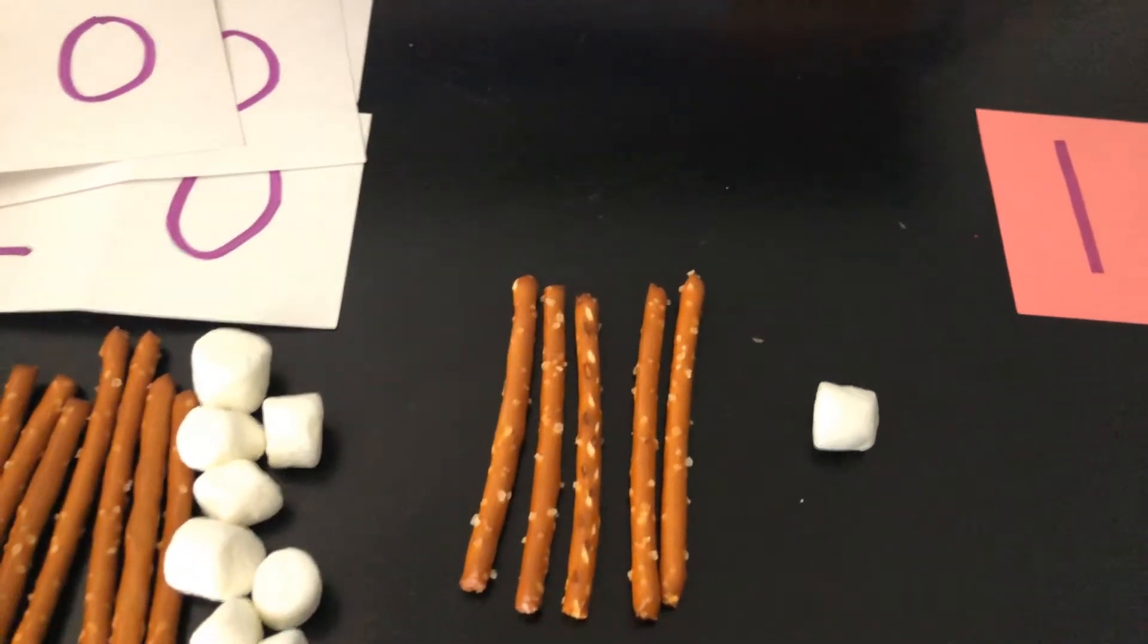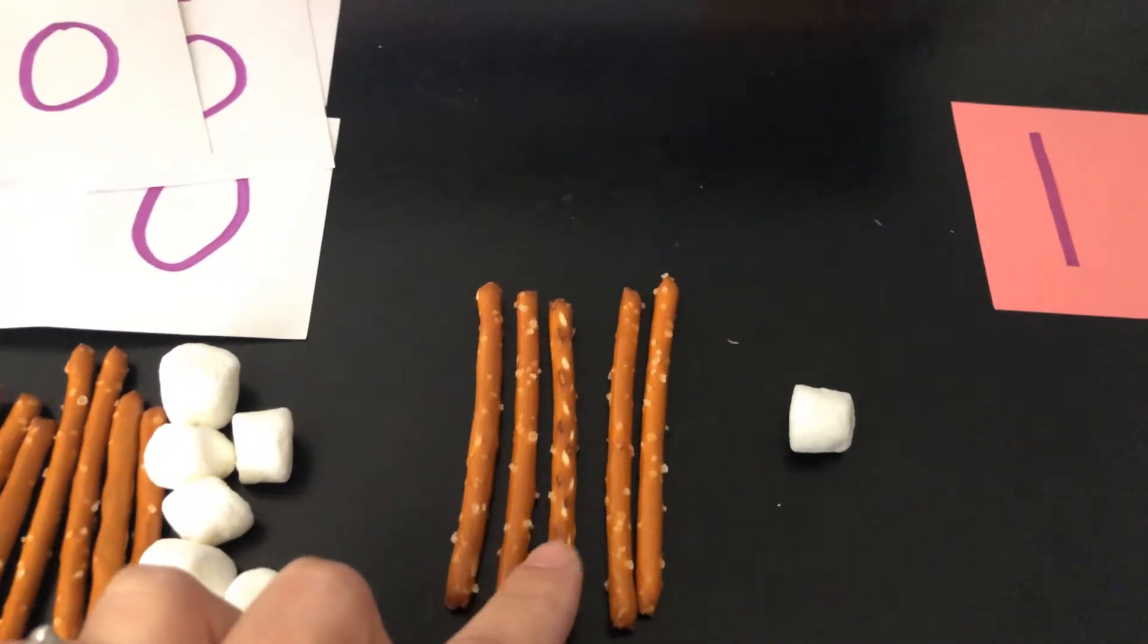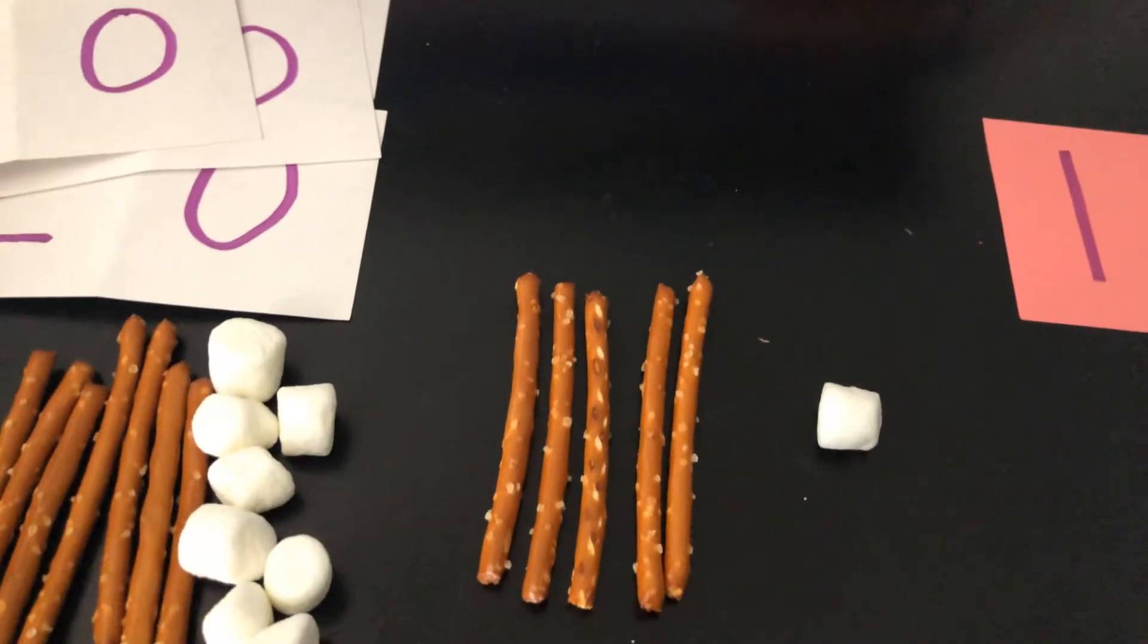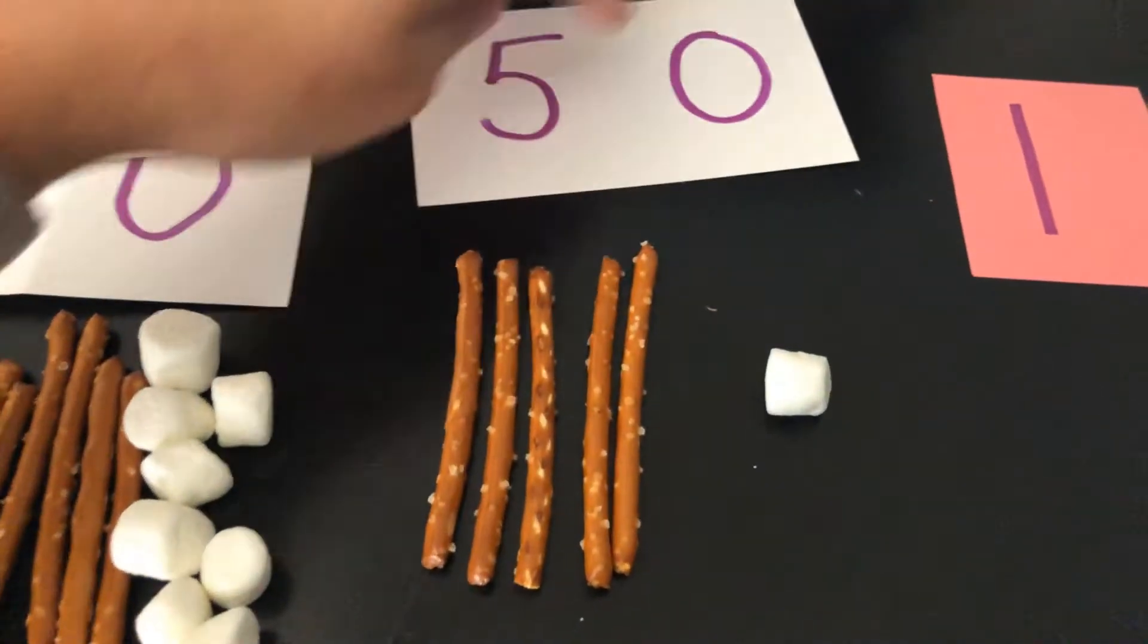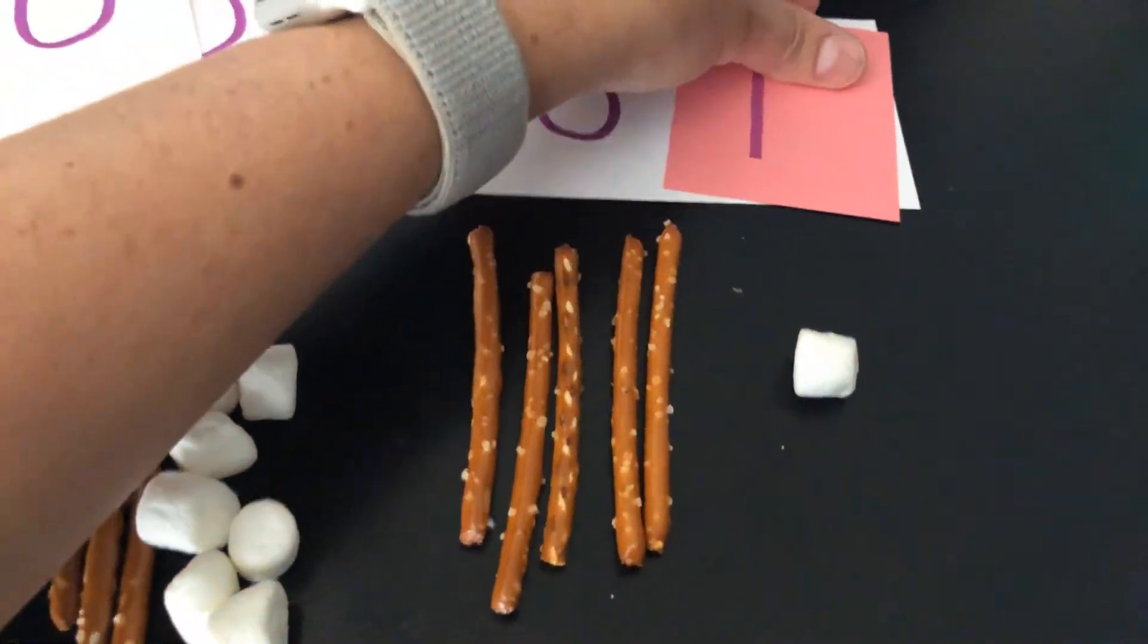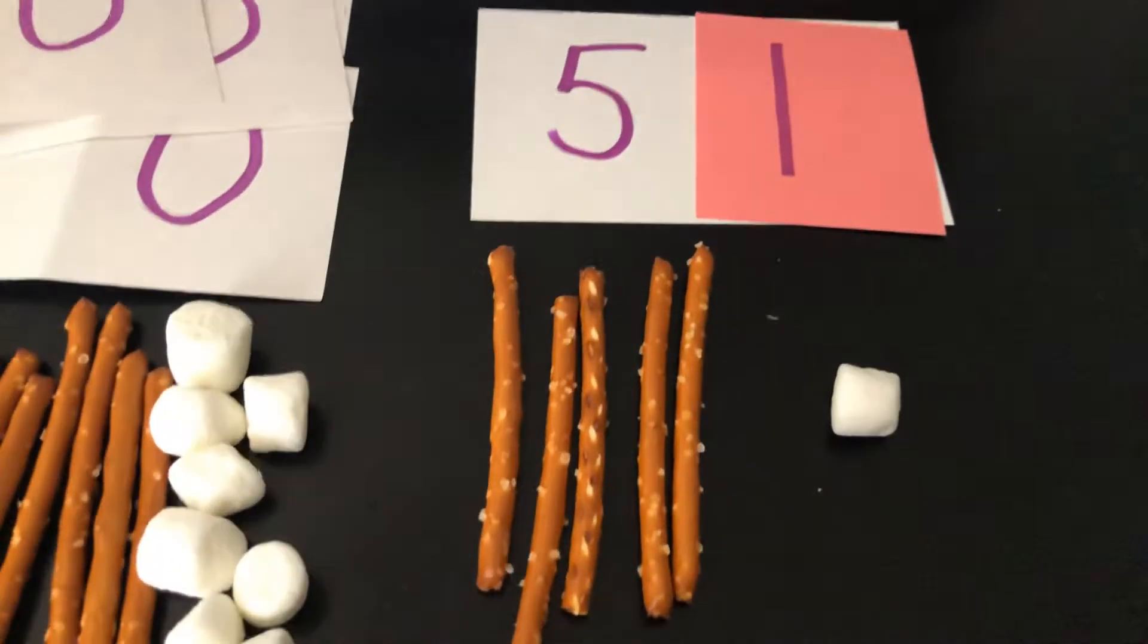So I could take away my 40. I need to find my 50, because 5 tens is the same as 10, 20, 30, 40, 50. And take out my 50, and then put my 1 for my 1 marshmallow over the 0. So, I have 51.